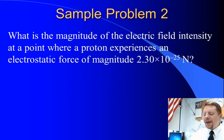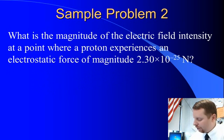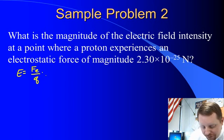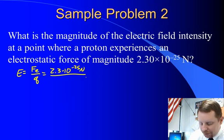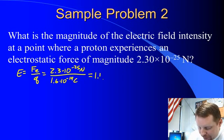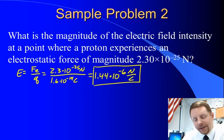What is the magnitude of the electric field intensity at a point where a proton experiences an electrostatic force of 2.3 times 10 to the minus 25 newtons? The electric field intensity, or electric field strength, is the electric force divided by the charge — 2.3 times 10 to the minus 25 newtons over the charge on a proton, 1.6 times 10 to the minus 19 coulombs. Working through the math, I come out with about 1.44 times 10 to the negative 6 newtons per coulomb — there's the electric field strength.